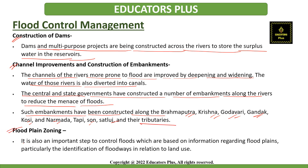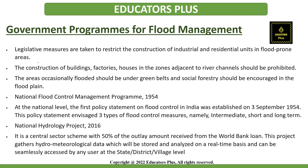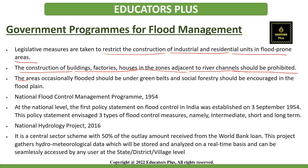The next is floodplain zoning, which is an important step to control floods. It is based on information regarding floodplains, particularly the identification of floodways in relation to land use. Legislative measures restrict the construction of industrial or residential units in flood-prone areas. Construction of buildings, factories, and houses adjacent to river channels should be prohibited. Frequently flooded areas should be kept as green belts, and social forestry should be encouraged in floodplains.